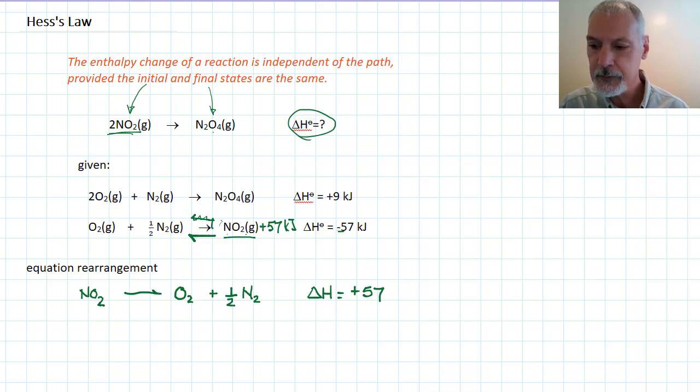Now I have this species on the correct side, and it's also a gas. This is also measured at standard conditions. But the other problem I have right now is there's two of them, so I need to double this equation, and that also requires doubling this heat.